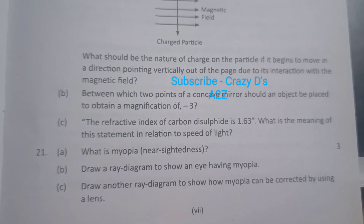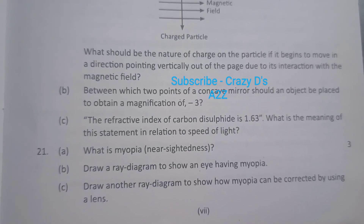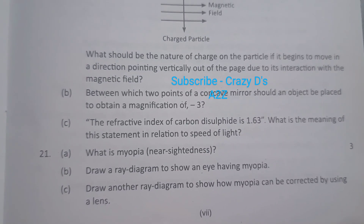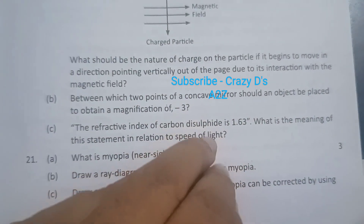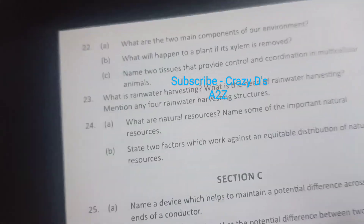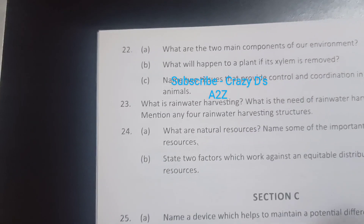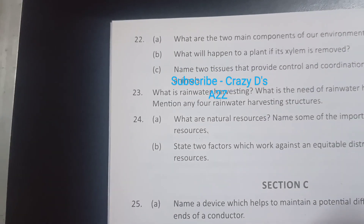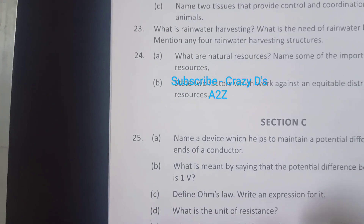What is myopia, that is near-sightedness? Draw a ray diagram to show an eye having myopia. Draw another ray diagram to show how it can be corrected. What are the two main components of our environment?